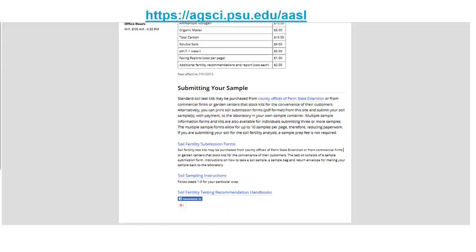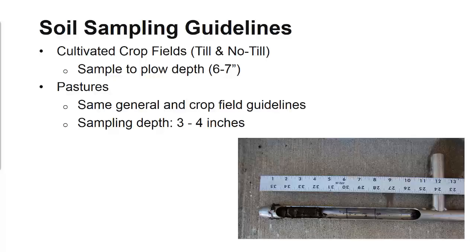The Penn State Agricultural Analytical Services Lab does offer a soil fertility test. You can go to the website by visiting the link above and find soil sampling instructions, which include soil depth guidelines. For cultivated crop fields, including tilled and no-till fields, sample to a plow depth of 6 to 7 inches.